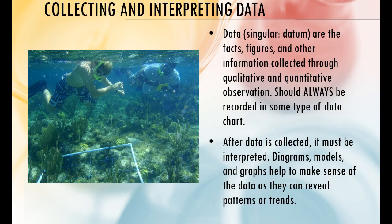The next step is collecting and interpreting data. Data are all the facts, figures, and other information we collect through qualitative and quantitative observations. You need to give me a data chart — I don't know where your data comes from if you don't provide one. After you collect the data, you interpret it by making a diagram, a model, or a graph to make sense of it. We do this because that's how we see the patterns or trends that might come from the data.